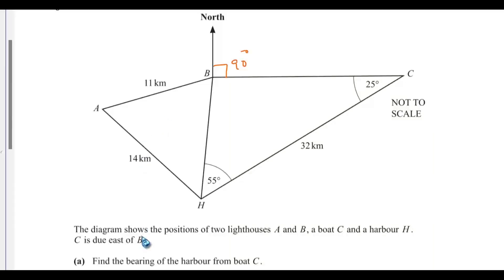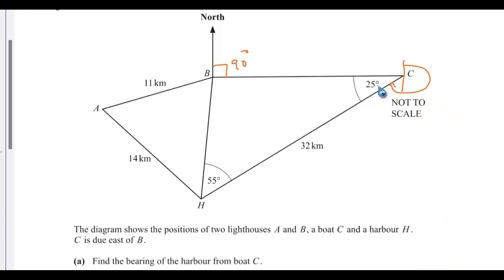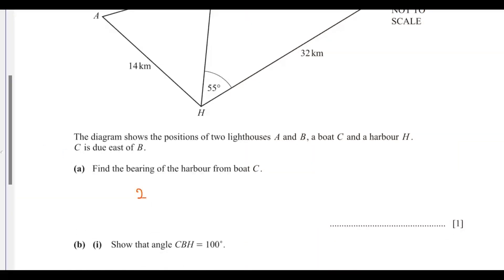Find the bearing of the harbor from C. The bearing of the harbor from C — if you draw a line here, it will fall in the third quadrant, which is 270. So what we need to do is subtract 25 from 270. That will give us the bearing straight away: 270 degrees minus 25 degrees equals 245 degrees.